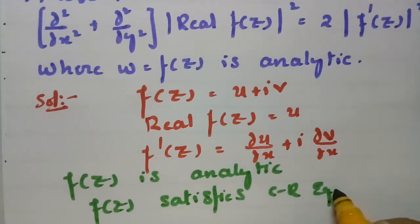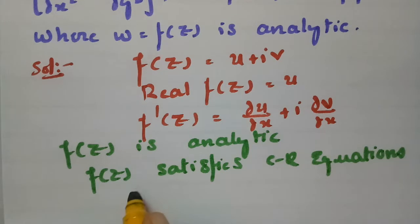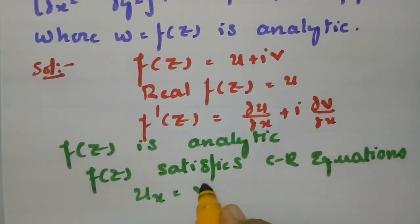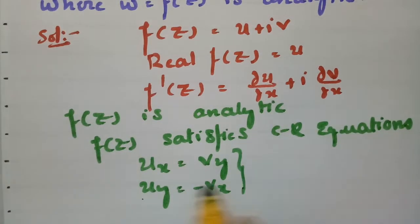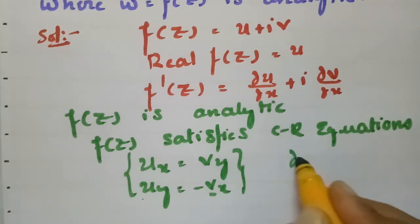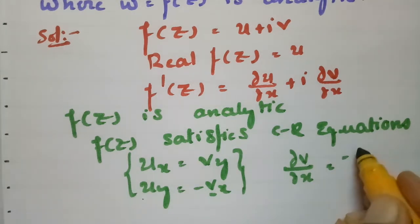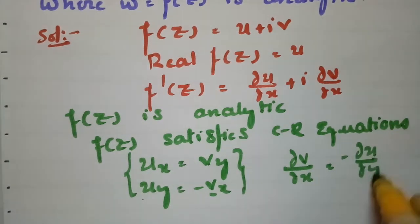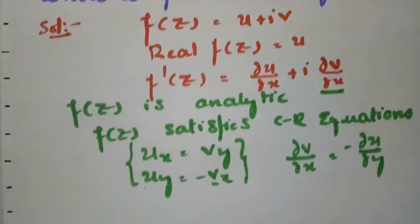The CR equations are: ux = vy and uy = −vx. So from this, ∂v/∂x = −∂u/∂y. In place of ∂v/∂x I am going to write −∂u/∂y.